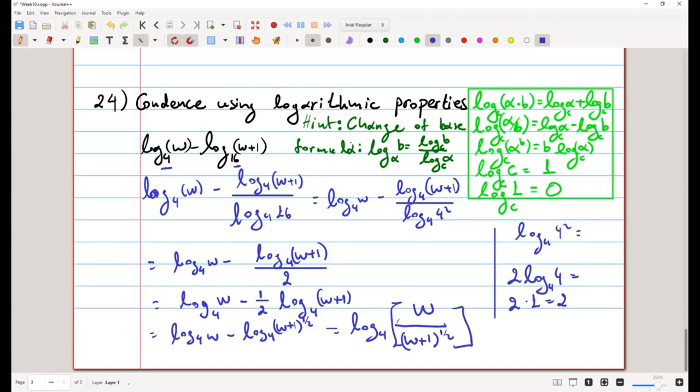One could have moved the minus along with the 1 half to the exponent and then they would have a plus here, in which case the answer would have been w times w plus 1 to the negative 1 half. Both answers are perfectly fine.